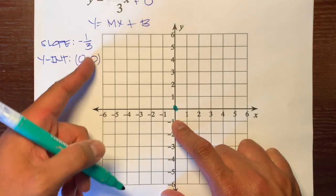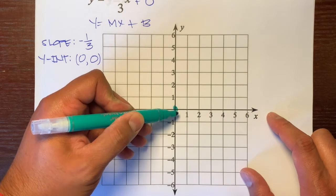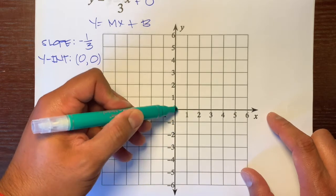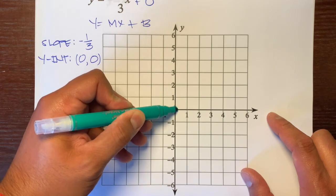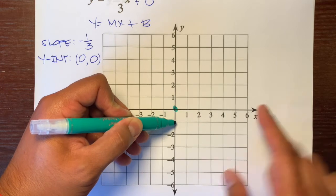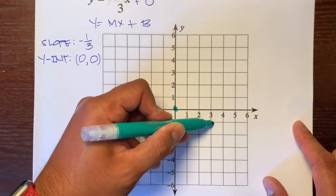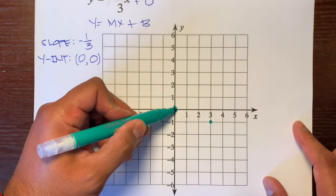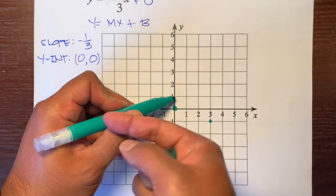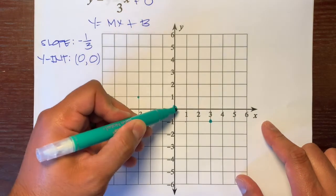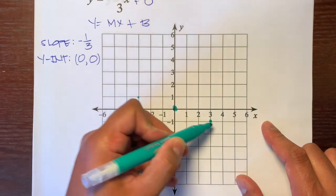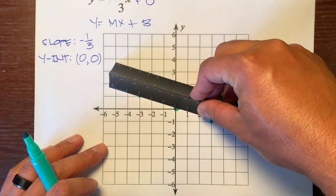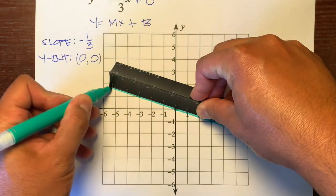Our starting point is at (0, 0) — the origin — where the X and Y-axes intersect. We go down 1 unit, then to the right 3. Going backwards: up 1 and left 3. Imagine the line going downhill because our slope is negative. Connect the dots with arrows if you'd like.